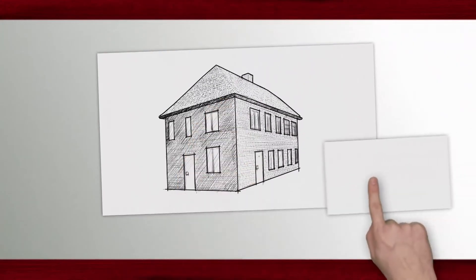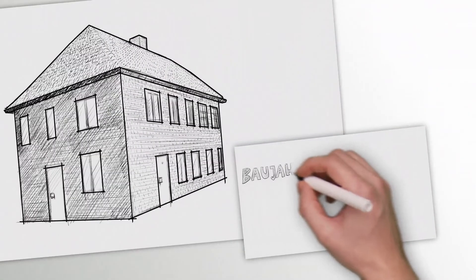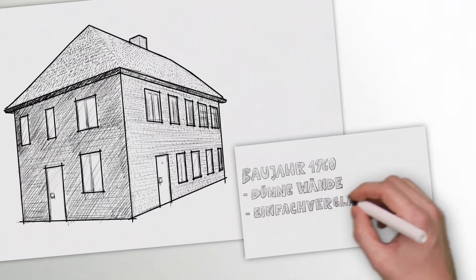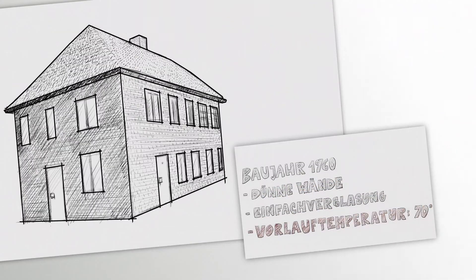Here are just two examples. A classic family house built in the 60s. In these older buildings, the heating system is designed to run at 70 degrees. This is very high by today's standards.